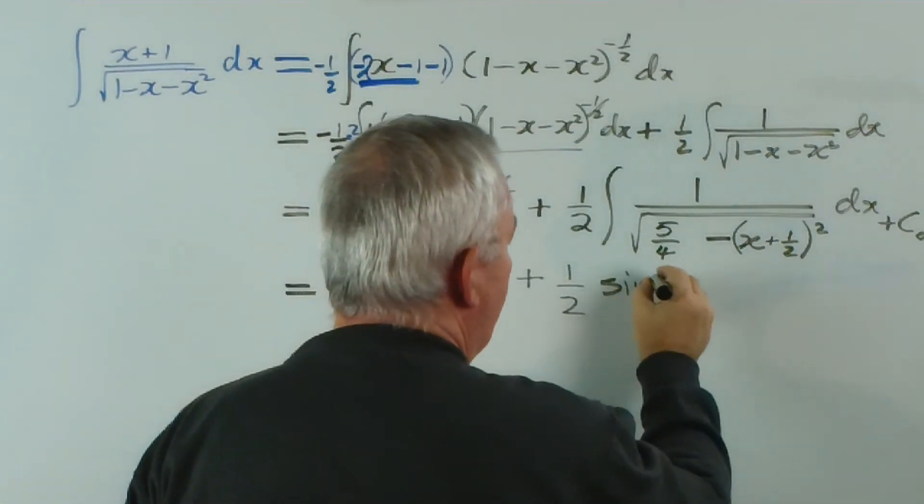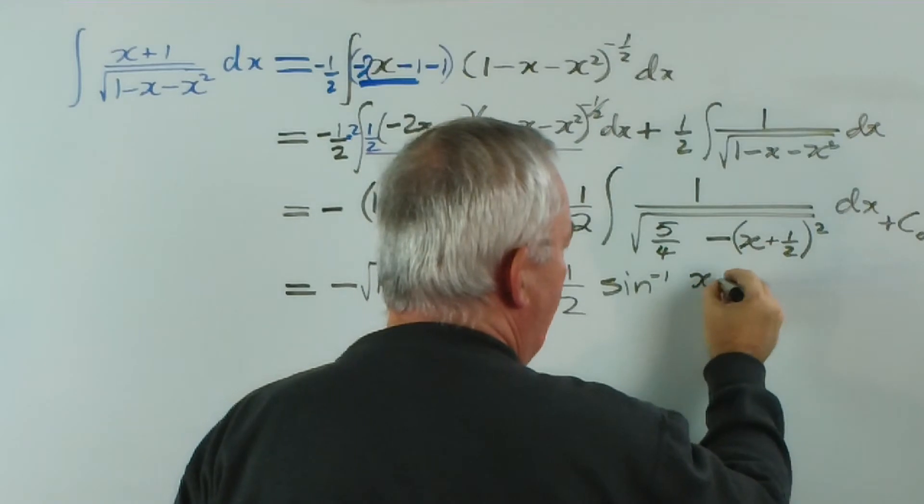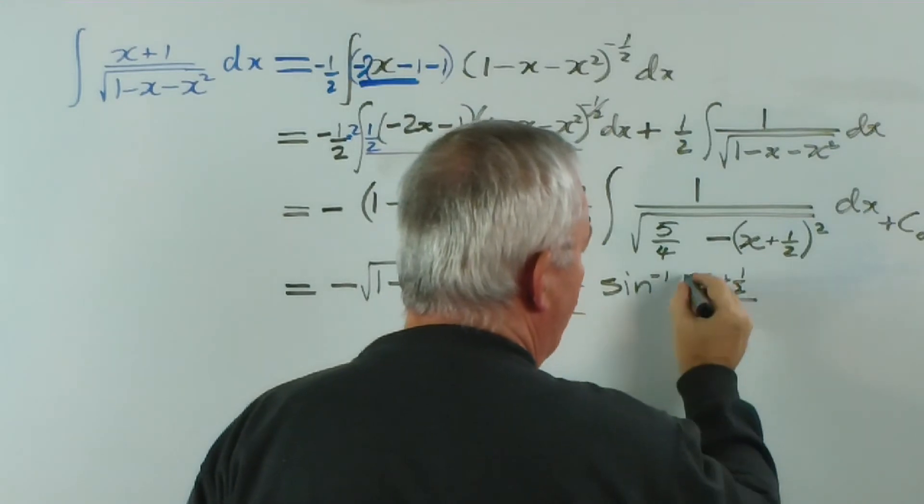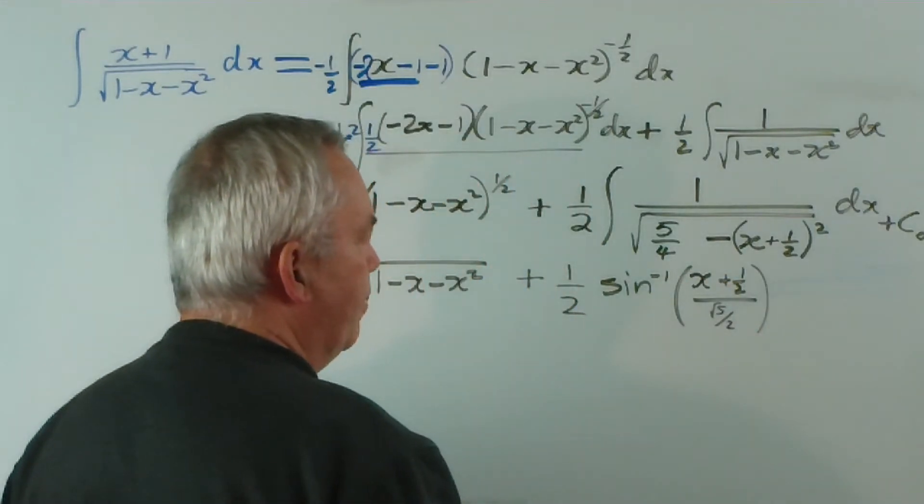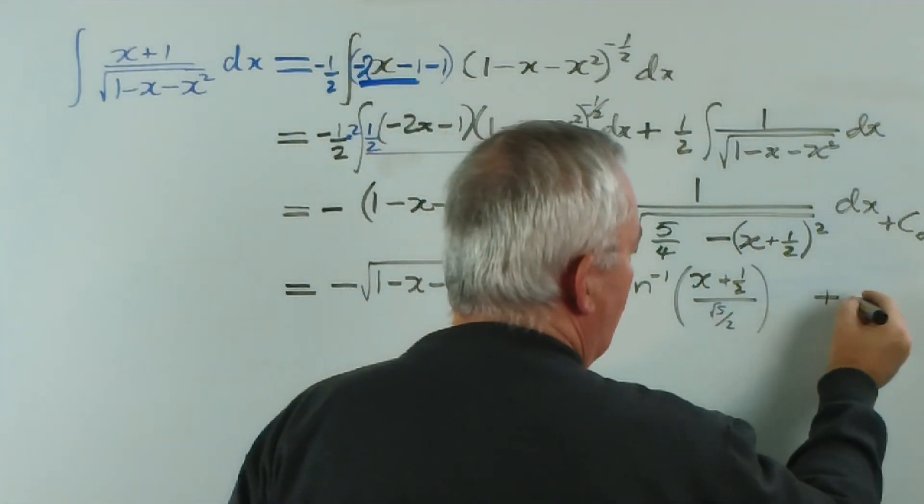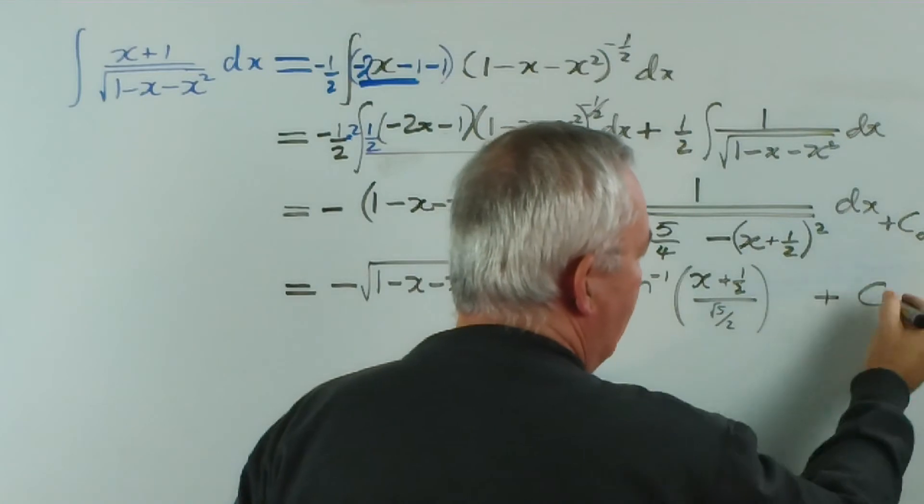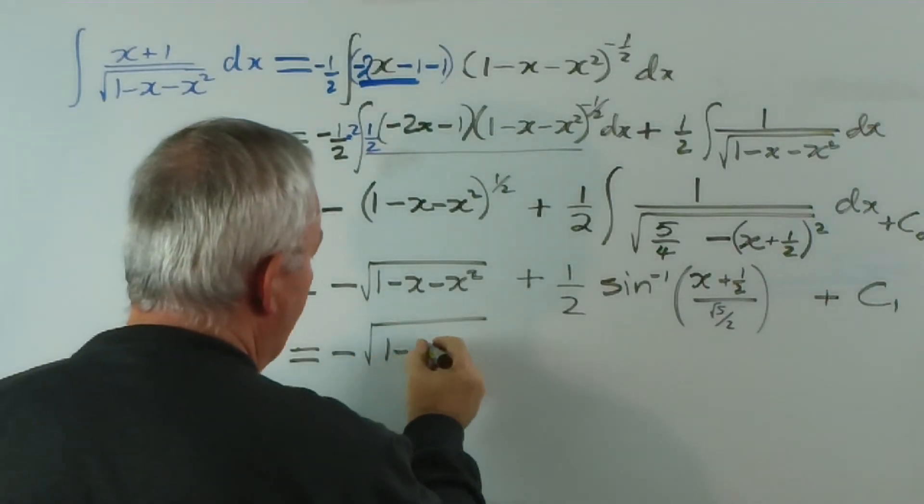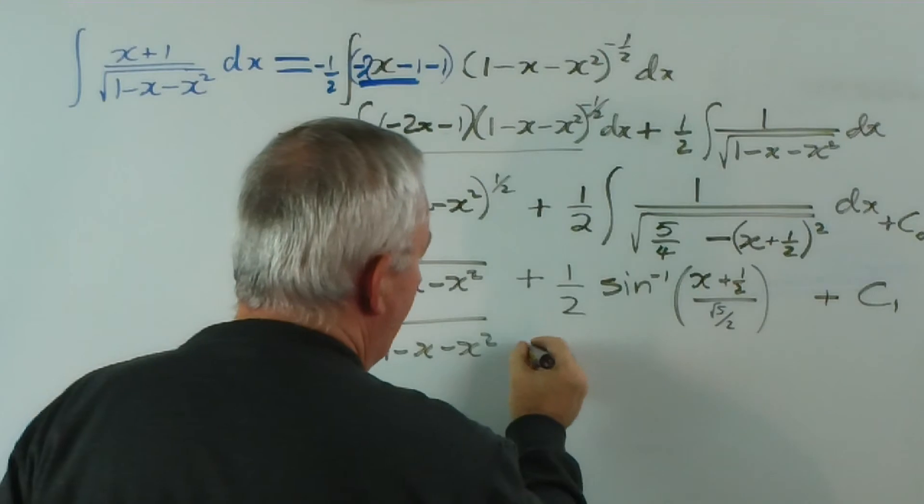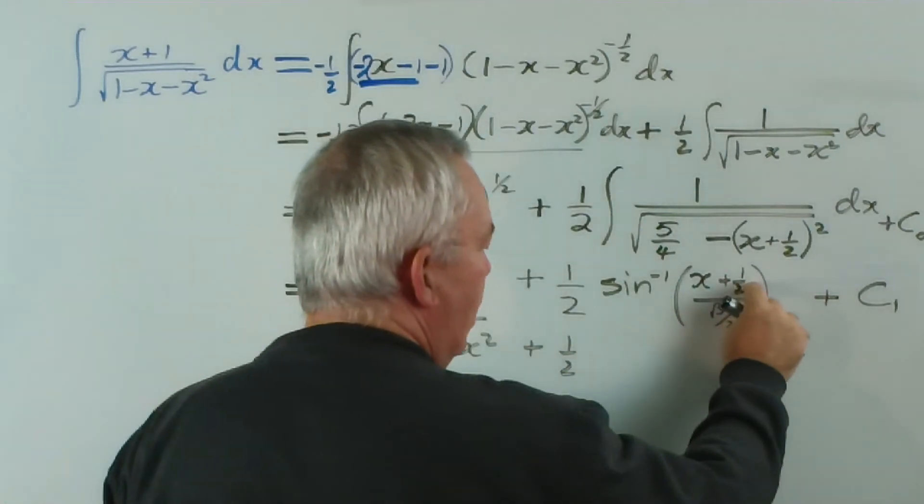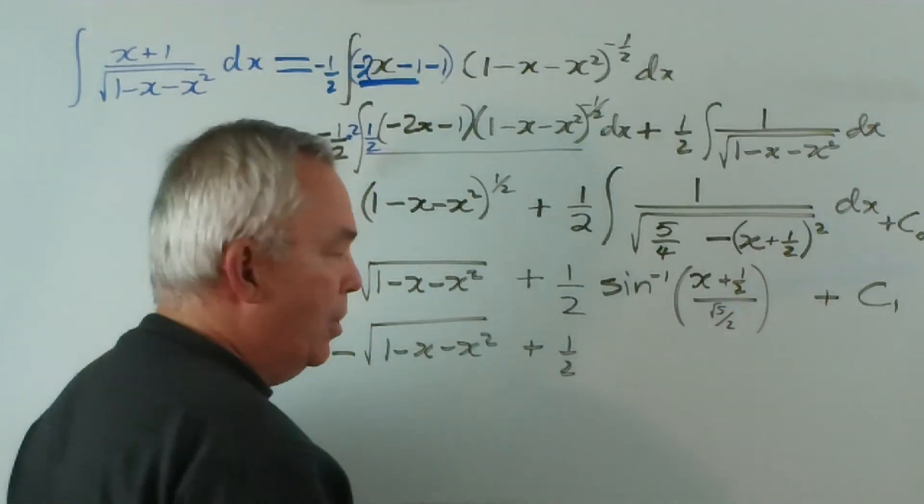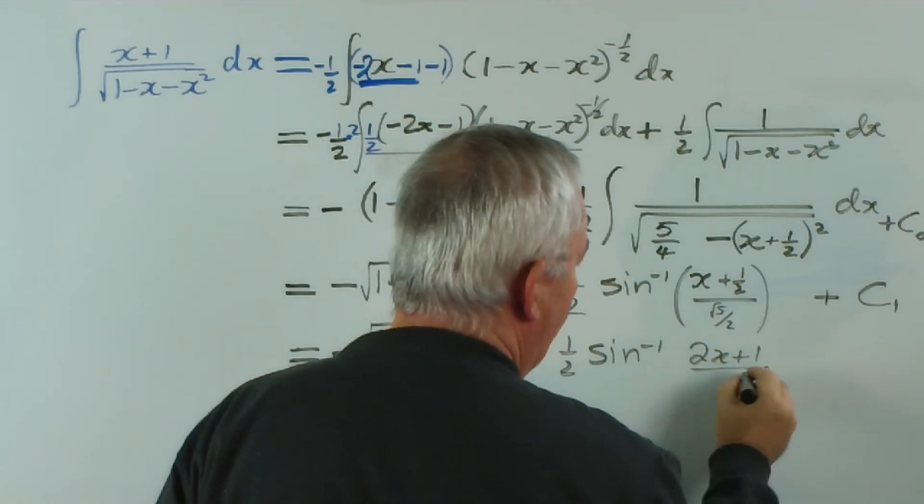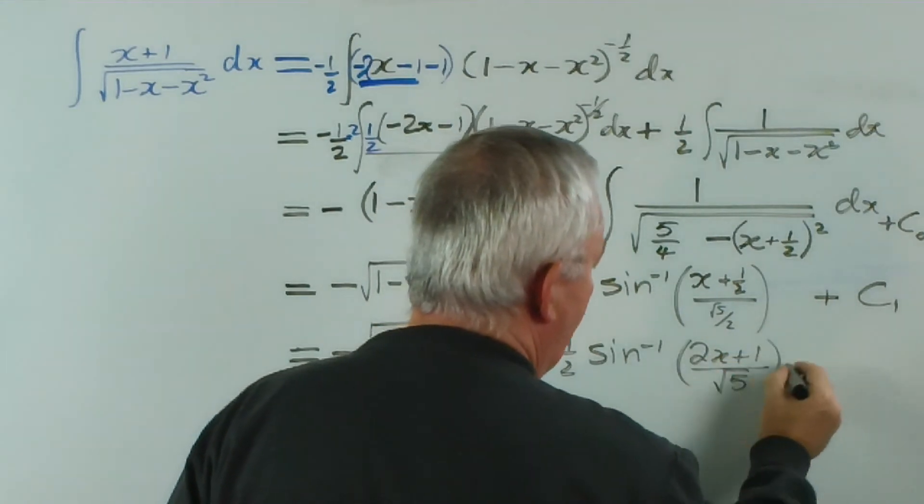So this will give us the inverse sine of the square root of this, which is x plus a half, over the square root of this, which will be root five on two... plus a constant. And because I'm adding another constant, I'll call this c one, just combining them. This will remain unchanged... plus a half. And this we can tidy up a little bit by multiplying the top and bottom by two. And we'll get the inverse sine of 2x plus 1 over root five... plus c.